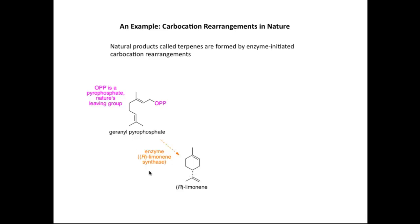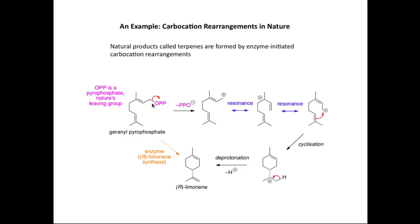In the presence of the enzyme R-limonene synthase, geranyl pyrophosphate is converted into R-limonene, forming the ring system as shown. The mechanism for this reaction has been postulated to involve carbocation intermediates. The first step believed to occur is breaking the carbon-oxygen bond and kicking out the leaving group to form an allylic cation.